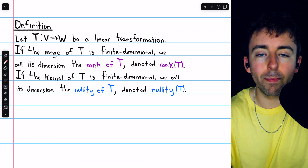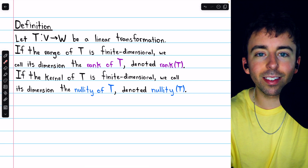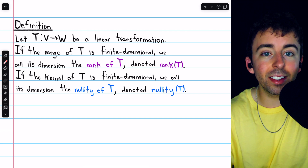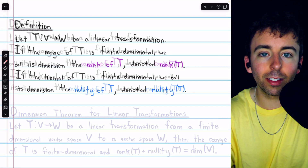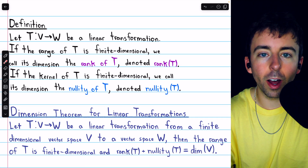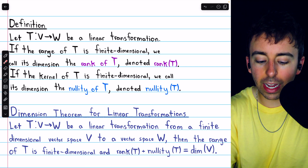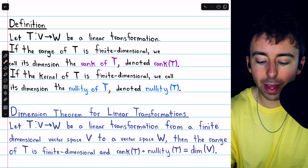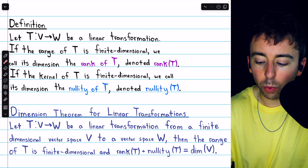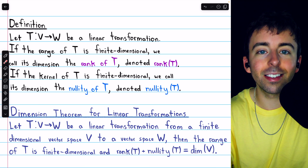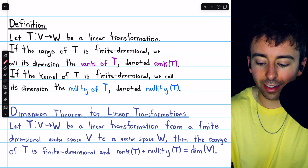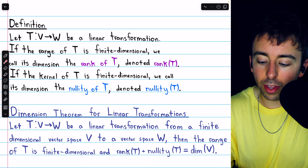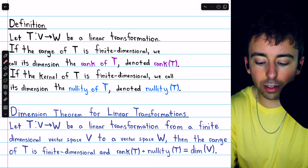We previously proved an important theorem on matrices called the dimension theorem, stating that if a matrix has n columns, then its rank plus its nullity is equal to n. That same theorem applies in this more general context of linear transformations. Let T be a linear transformation from a finite dimensional vector space V to a vector space W. Then the range of T will be finite dimensional, and the rank plus the nullity will equal the dimension of the domain vector space V. Note that it is part of the statement of the theorem that the range of T is finite dimensional.